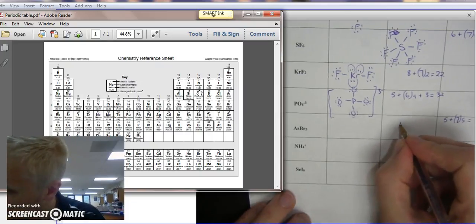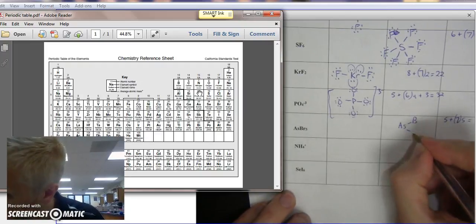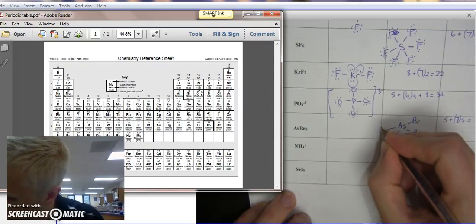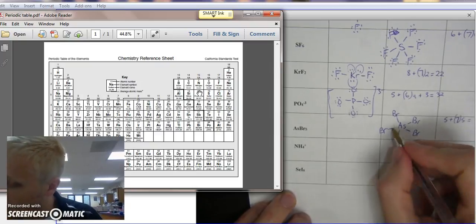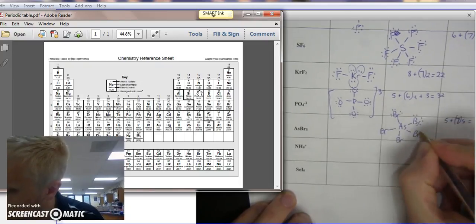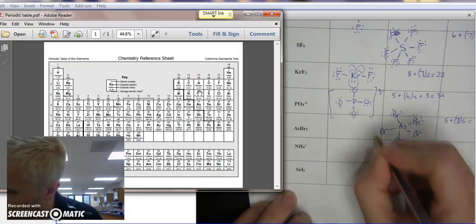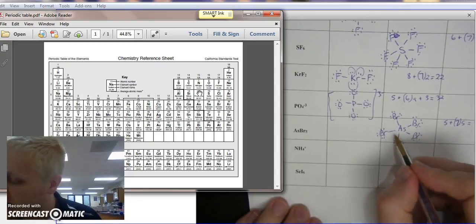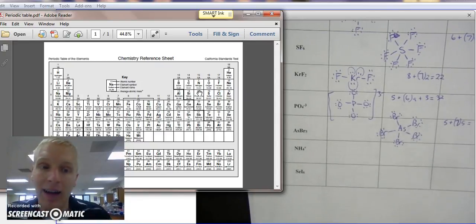So we're going to write As in the middle, because it's the one in least supply. And it's connected to 5 bromines. [counting from 2 to 40]. All of them have 8, except for arsenic, it's 2, 4, 6, 8, 10. That's all right, it expands the octet.